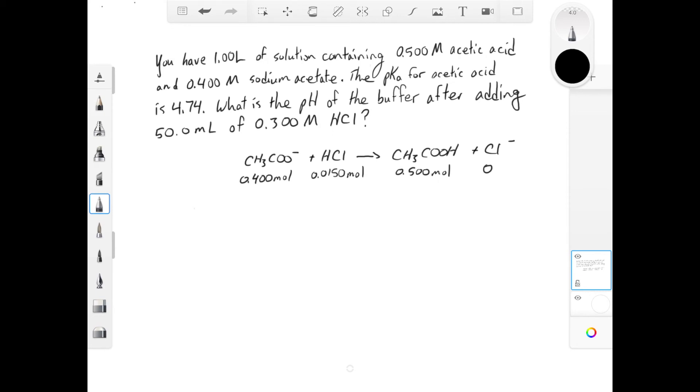Which means at the end of the day, 0.015 moles of HCl will all be used up. The acetate ion will also be used up in the amount of 0.015 moles, leaving us with 0.385 moles at the end of the reaction. The amount of acetic acid and chloride will go up by that 0.015 moles. We know from previous work that the chloride ion has no impact on the pH of a solution, so we can ignore it altogether.